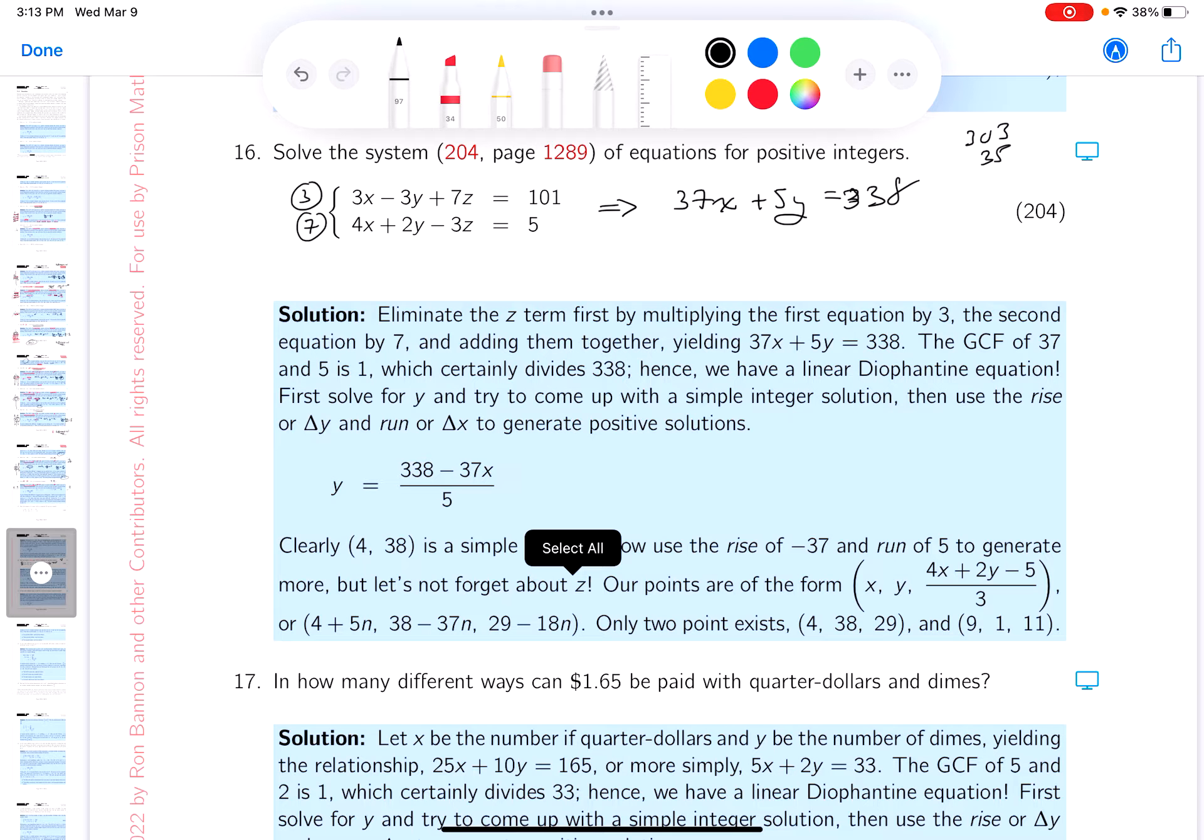All right. Now, the GCF between 37 and 5 is 1. Let me write that down for you. That certainly divides that, and we're good to go. It's a linear Diophantine equation. So let me just erase this stuff over here. I'll erase my baby arithmetic, and I'll erase this over here.